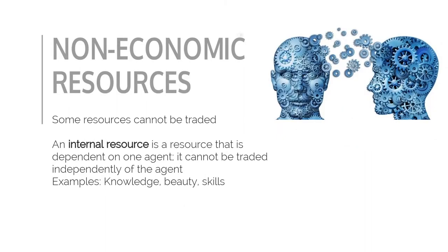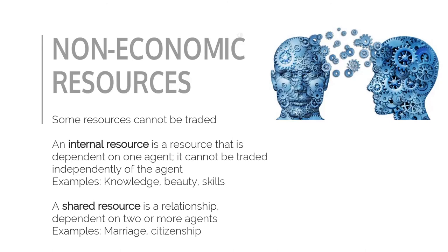Not all resources are economic resources, as some resources cannot be traded between agents. Certain resources are dependent on one agent and will exist only as long as that agent exists. For example, the knowledge and beauty of a person are dependent on that person and cannot exist outside him or her. Such resources are called internal resources, as they exist within an agent. There are also resources that are dependent on two or more agents — they can exist only as long as these agents exist. Such resources are commonly called relationships, for example, a marriage or citizenship.